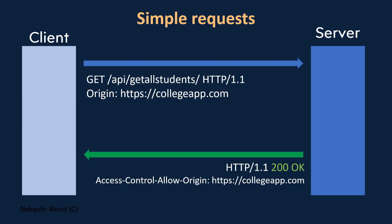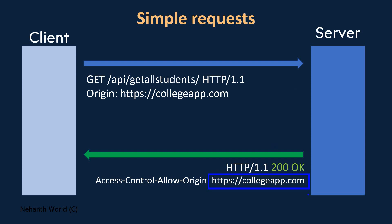If you want to allow only particular origins, you can put the specific origin name instead of star. If you want to allow multiple origins, you can put them comma-separated.